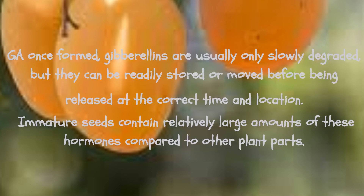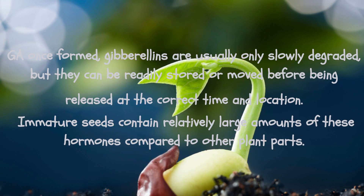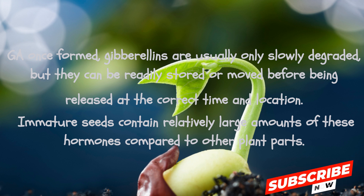Storage: GA-1 is formed; gibberellins are usually only slowly degraded, but they can be readily stored or moved before being released at the correct time and location. Immature seeds contain relatively large amounts of these hormones compared to other plant parts.